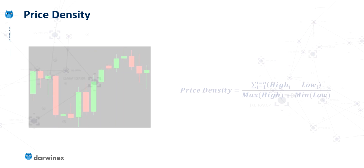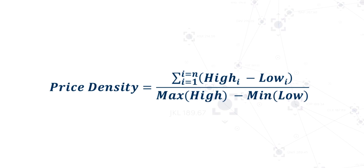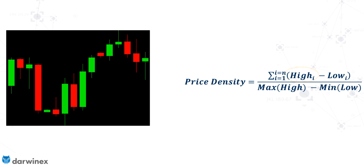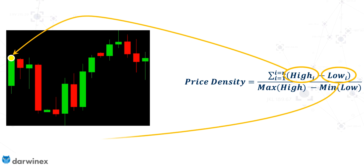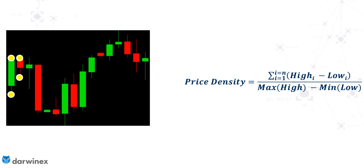The actual calculation looks like this — let's unpack it and see what it really means against some actual price action. The numerator on top looks at the high of each bar and the low of each bar, calculates the difference, and then sums up all of those values — from the first bar, like you see here, the second bar, third bar, and so on, all the way to the final bar within the period of time we're looking at. This gives us an idea of the fluctuation of the individual price moves.